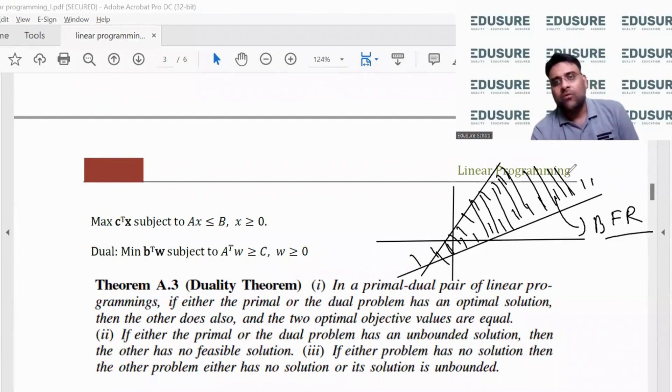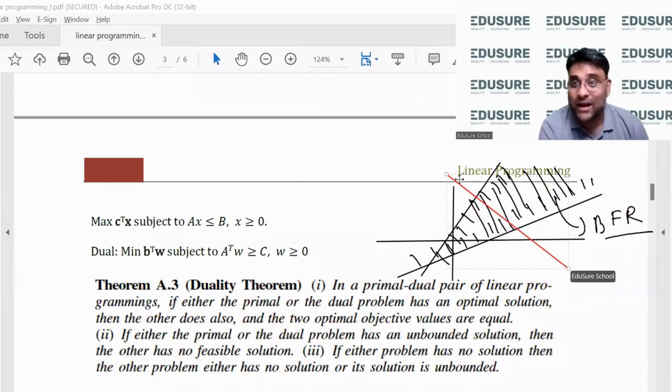Now, we are supposed to maximize this line. The more I move towards the right, the higher value it is taking. So I keep moving, moving, moving. So what is the solution here? Here, the solution is unbounded because the more I move towards the right, the higher it becomes. So this is called an unbounded solution case.